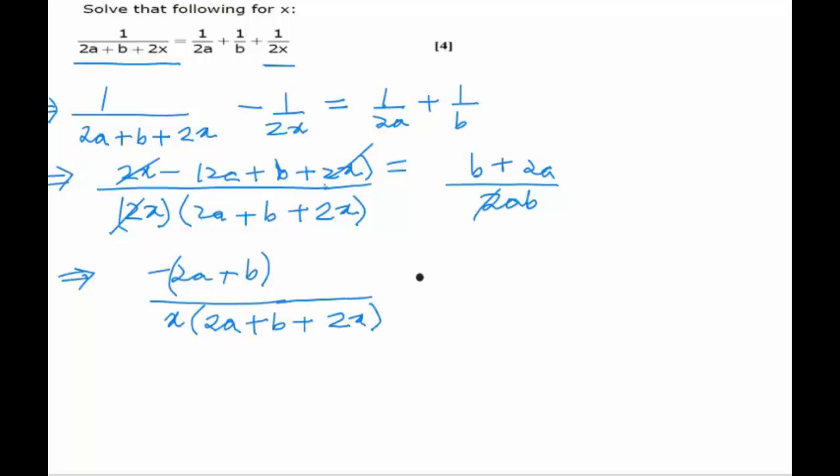We observe that this packet and this packet cancels out. We are left with minus 1 upon x times 2a plus b plus 2x. We have no other option but cross multiplying.